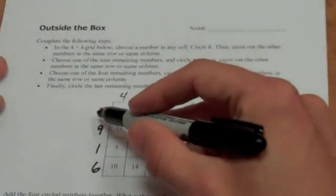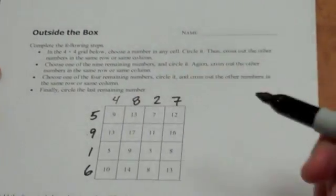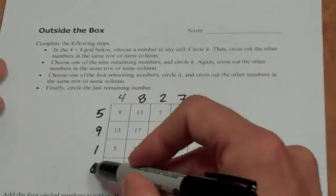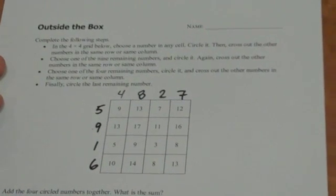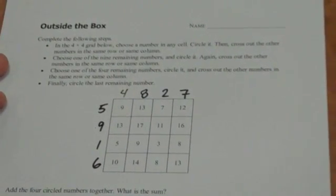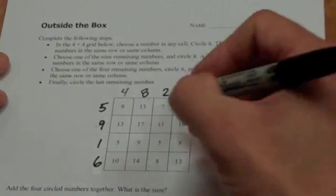Nine, for instance, is the sum of five and four. Eleven is the sum of nine and two. Six plus eight makes the fourteen that occurs there. So whenever a student chooses each number in a row and column, they get the number from the top and the number from the side as part of their final sum.